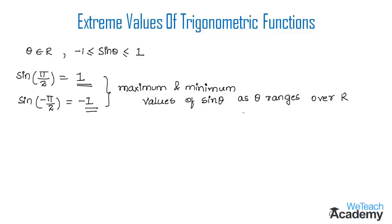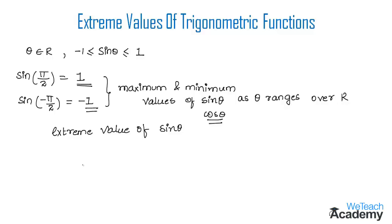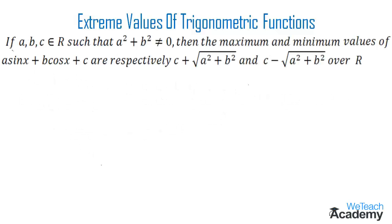The maximum and minimum values of sine theta are 1 and minus 1, and each of them is called an extreme value of sine theta. Similarly, 1 and minus 1 are the maximum and minimum values of cos theta as theta ranges over R. Now let us try to get a formula to find the maximum and minimum values of trigonometric functions, and in order to do so, let us prove a theorem.